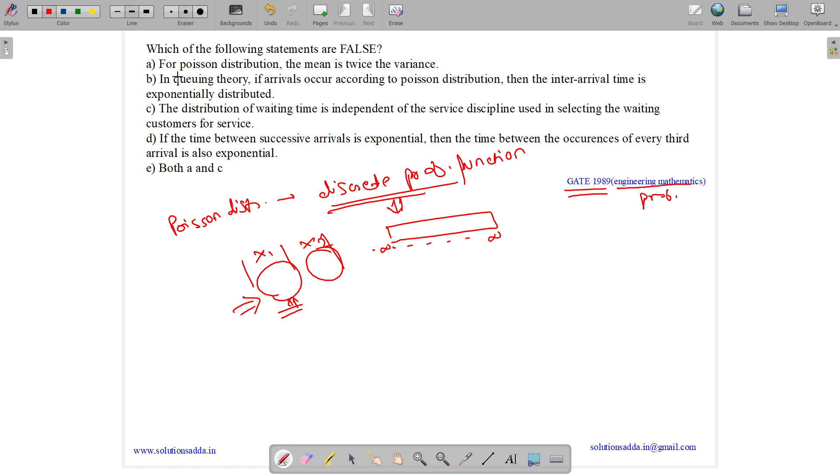So for option A, for Poisson distribution, the mean is twice the variance. This is false. This is true for another type of distribution which is called binomial distribution. So for a binomial distribution, we can say mean equals twice variance. So this is false.